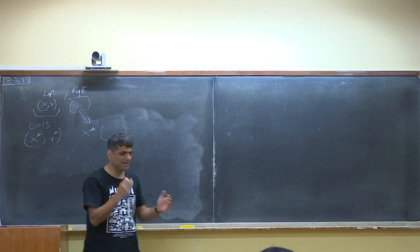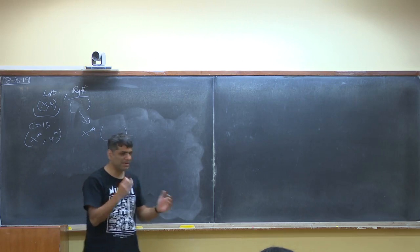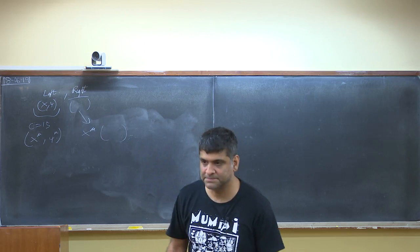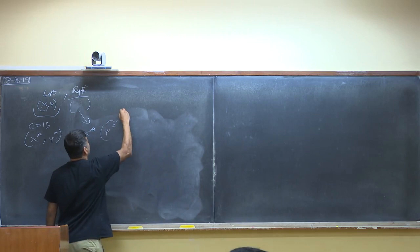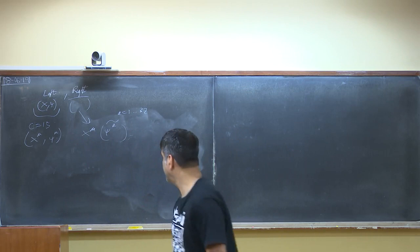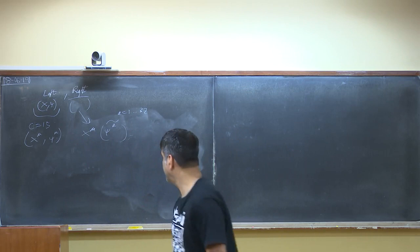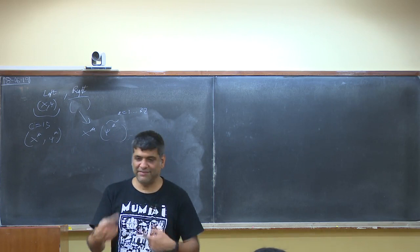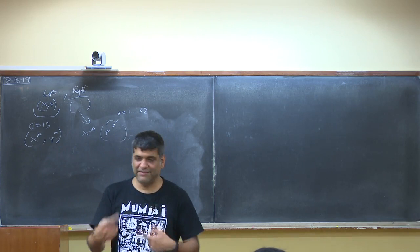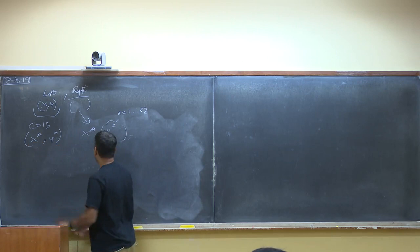In a previous lecture we made a trial attempt: we took the c=16 CFT to be made up of 32 fermions ψ^a, a=1 to 32. We were constrained by the requirement of modular invariance. We looked for theories in which we imposed the GSO projection separately on left and right, getting modular invariance up to possible phases separately on each side.